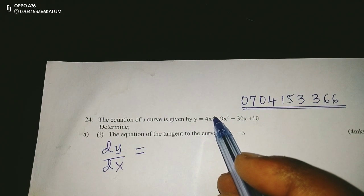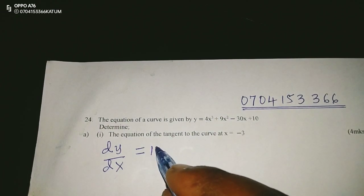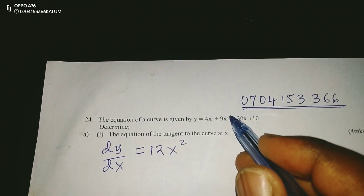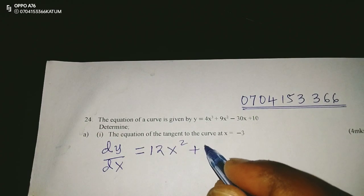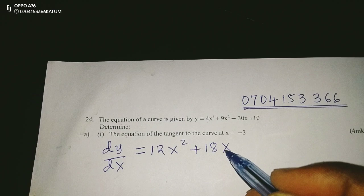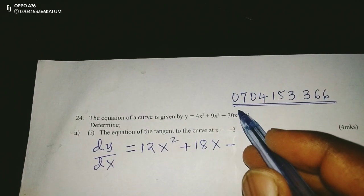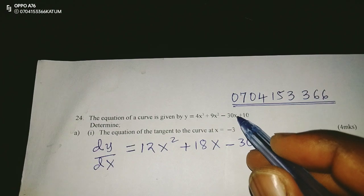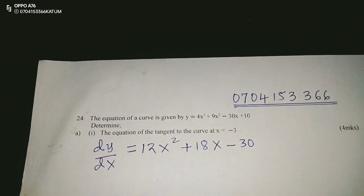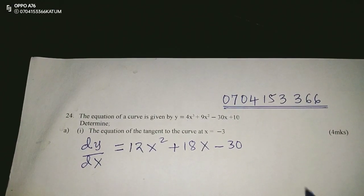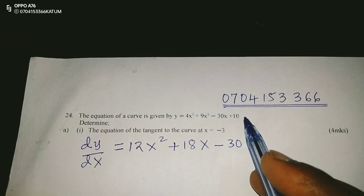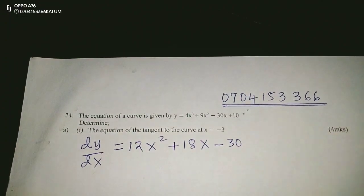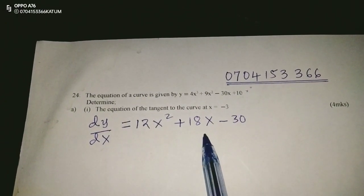Starting with 4x³: we drop the power 3 down to multiply 4, giving 12x², where the power reduces from 3 to 2. Next, for 9x²: we drop the 2 to multiply 9, giving 18x, where the power reduces to 1. For negative 30x: we drop the power 1, so it remains 30, and x to the power 0 equals 1, so it stays as 30. The constant 10 disappears because its x-term has power 0, which drops to give 0. Our gradient function is therefore dy/dx = 12x² + 18x − 30.